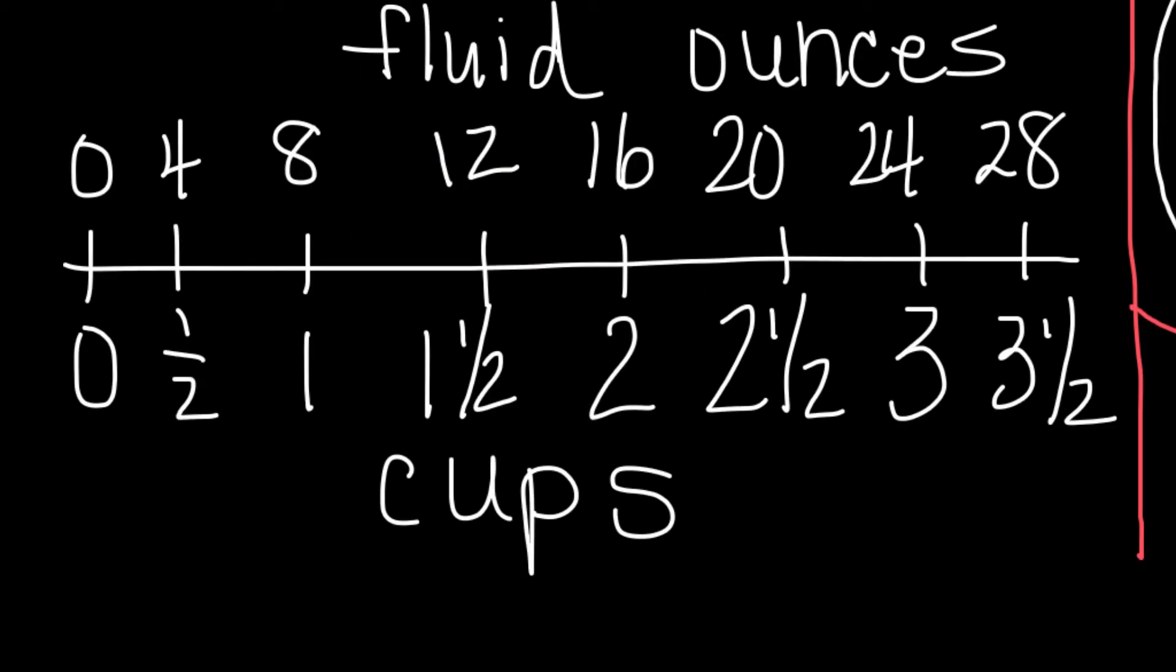So here is our measurement scale, and as you can see, I have fluid ounces up here at the top and down at the bottom I have cups. If you look here, if I have zero, of course that's going to be equivalent to zero. But if I have four fluid ounces, that's equivalent to half a cup. Eight fluid ounces is equal to one cup, which we just talked about a minute ago, and then we can go on down the measurement scale to see what the equivalencies are.